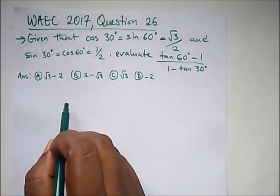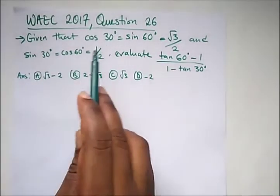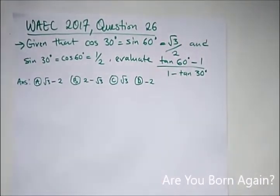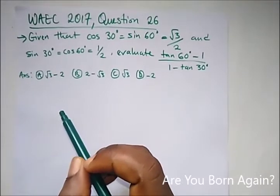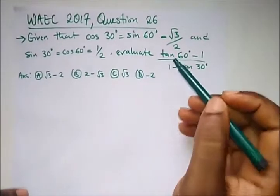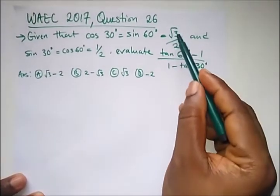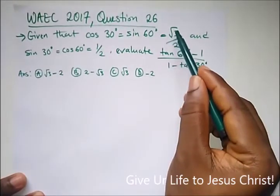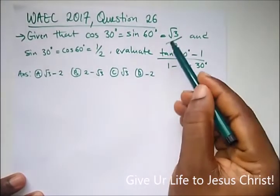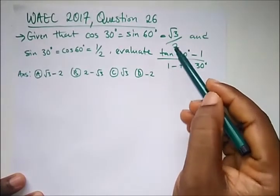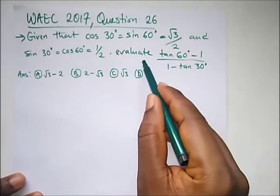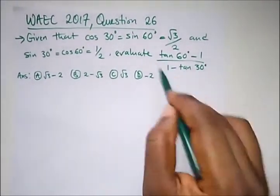This is the WAEC 2017 question 26. It says: given that cos 30 is equal to sin 60 degrees, which is root 3 over 2. If you remember from our video, we should by now know by heart our special angles of 30, 60, and 45. Here, sin 60 is opposite over hypotenuse, and cos 30 is adjacent over hypotenuse. The question says evaluate this particular operation.